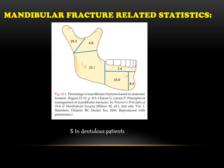Coming to the incidence of mandibular fractures: the most frequently fractured region is the body of the mandible, followed by the condyle, the angle of the mandible, the symphysis or parasymphysial region, the coronoid, and dentoalveolar fractures being the least common.